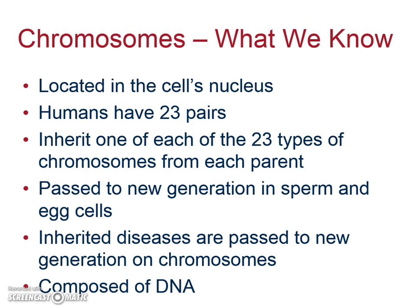As humans, we have 23 pairs. A pair versus a single chromosome is very important to understand. Many students look at the word pair and don't conceive what that means. Imagine that you have 5 pairs of shoes in your closet — that means you have 10 total. Pairs mean there are 2. So when someone says I have 46 chromosomes, or I have 23 pairs, that's the same thing.